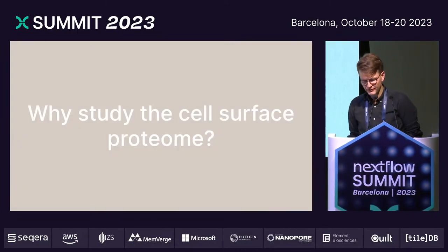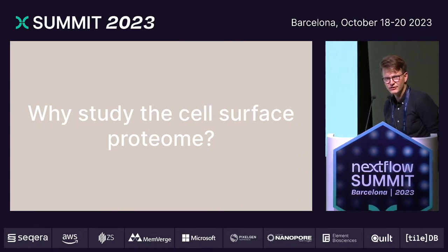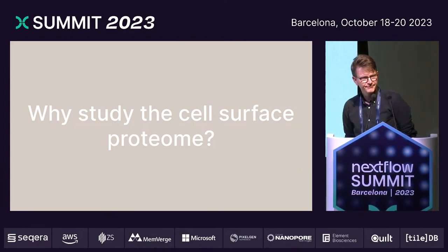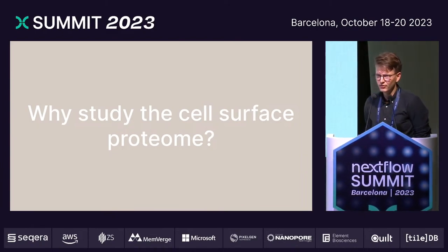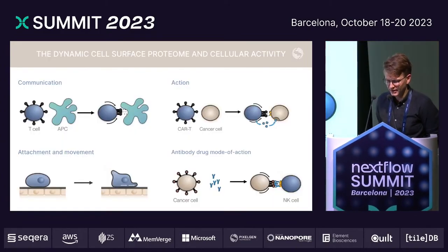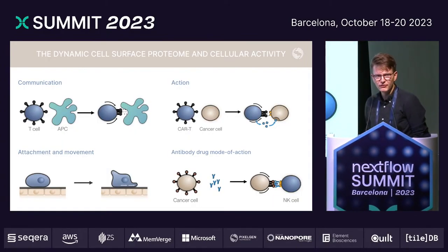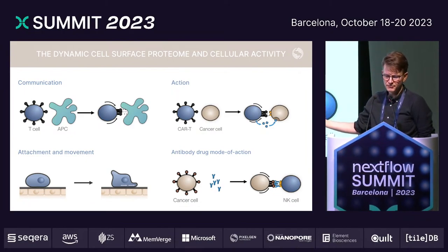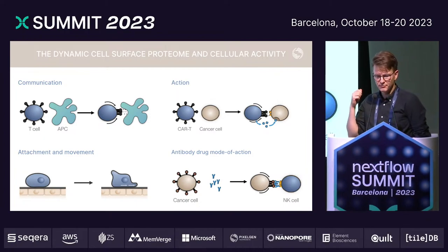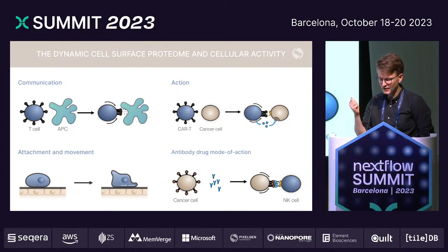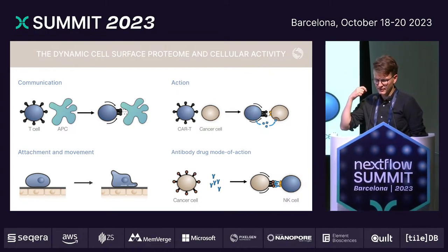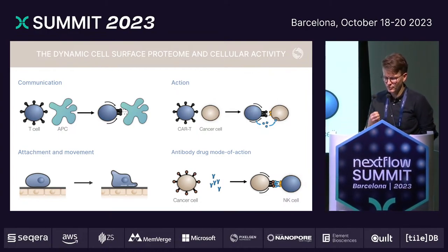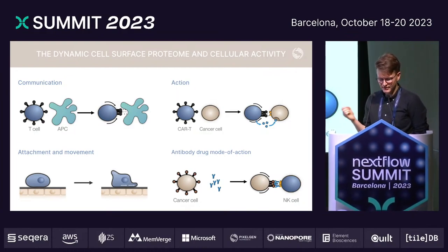What we study is the cell surface proteome of single cells. Why would you want to do that? It plays a very important role in several biological processes. We know it's important for communication between cells, and we know that it can work as a mode of action — for example, when a CAR T cell attacks a cancer cell.